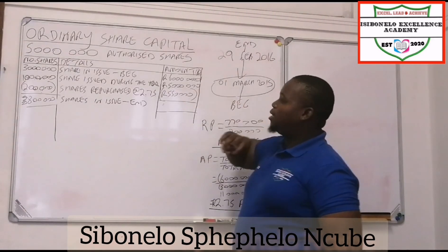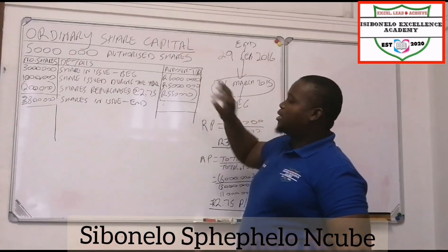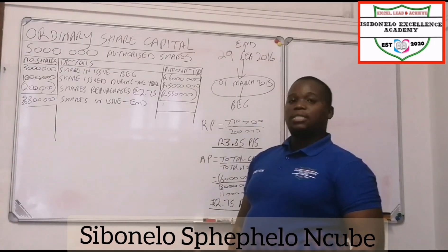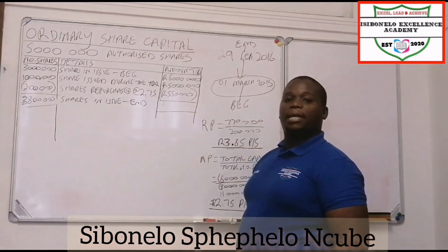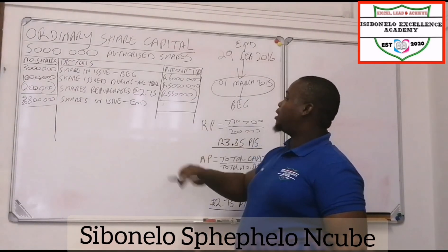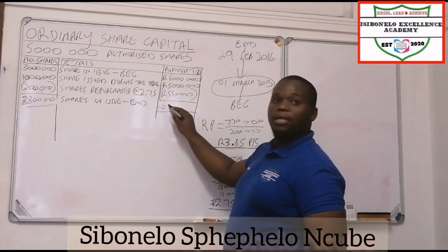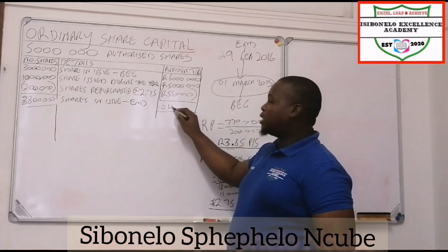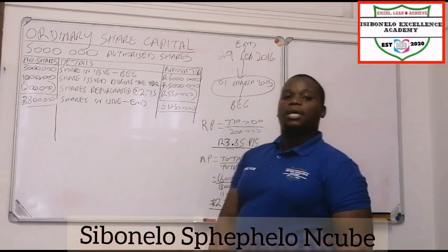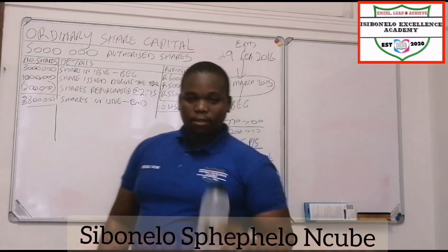To get the capital available at the end of the year, you take the capital at the beginning and minus the amount paid by the company for the share repurchase. That gives us 10 million 450,000. This is how we do it.